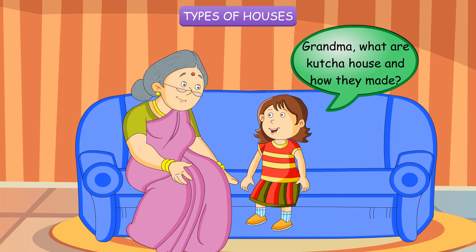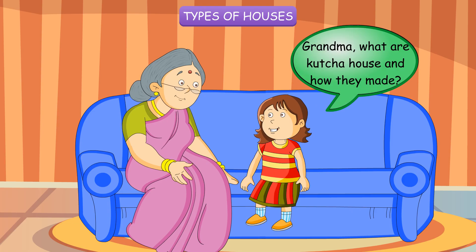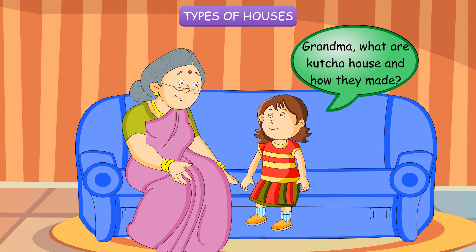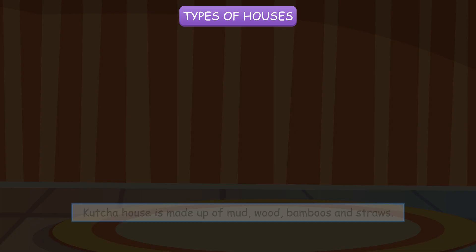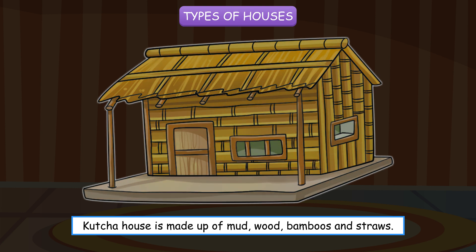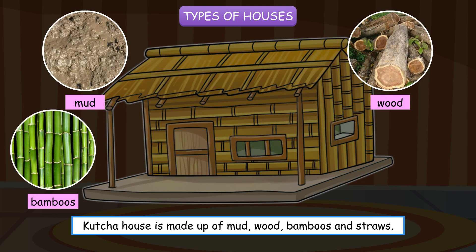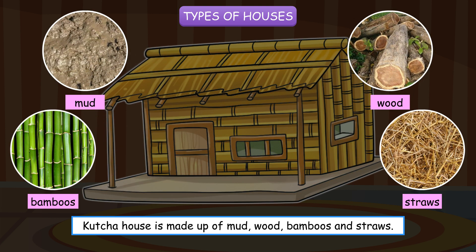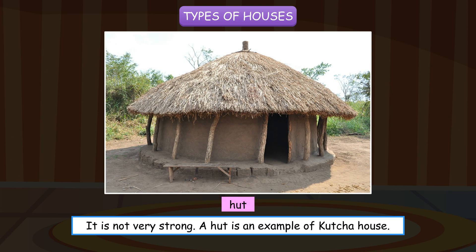Grandma, what are Kacha Houses and how are they made? Kacha House is made up of mud, wood, bamboos and straws. It is not very strong. A hut is an example of a Kacha House.